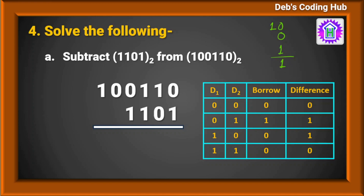Let's perform this subtraction. The rightmost digit is 0, which is less than 1, so I add the base of the binary system which is 2. So 2 minus 1 is 1. Then the borrow is 1. If I do 1 minus 1 it becomes 0, so 0 minus 0 is 0 with no borrow. Then 1 minus 1 is 0 with no borrow. The next result is 0, and then 1.